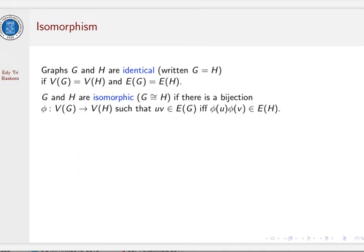To be precise, graph G and H are isomorphic if there exists a bijection φ from V(G) to V(H) such that this bijection preserves the adjacency. It means that uv is an edge in G if and only if φ(u)φ(v) is an edge in H.